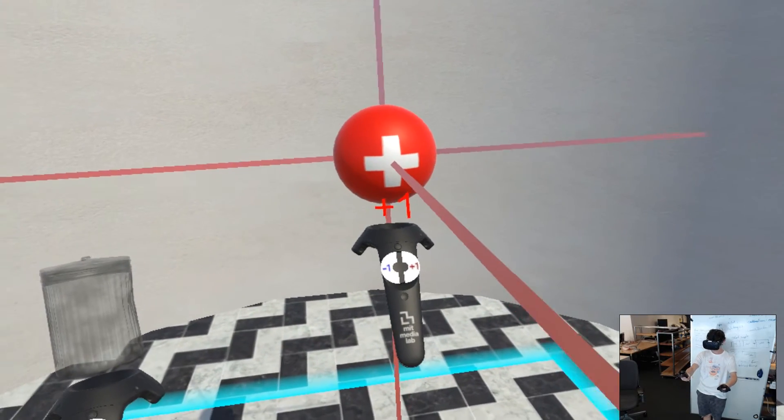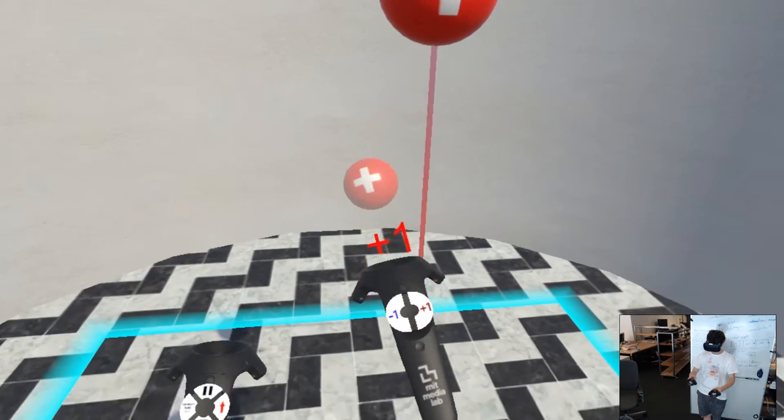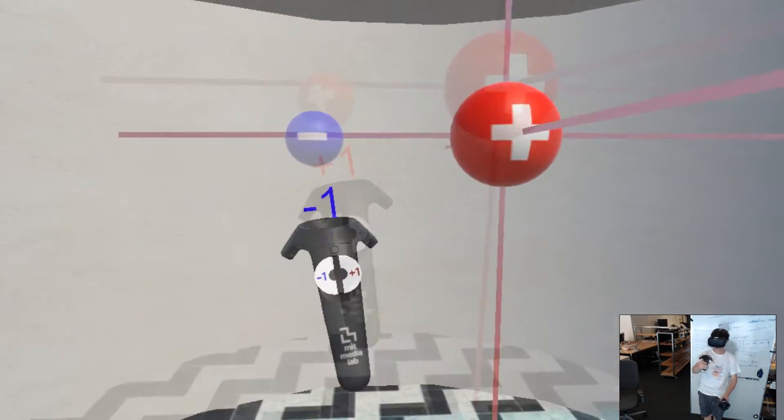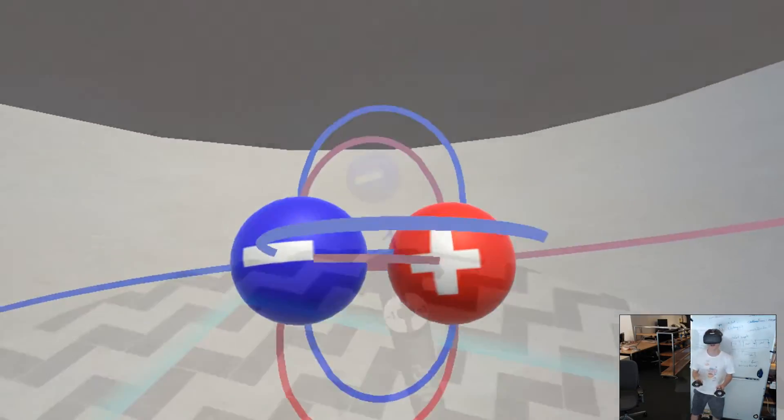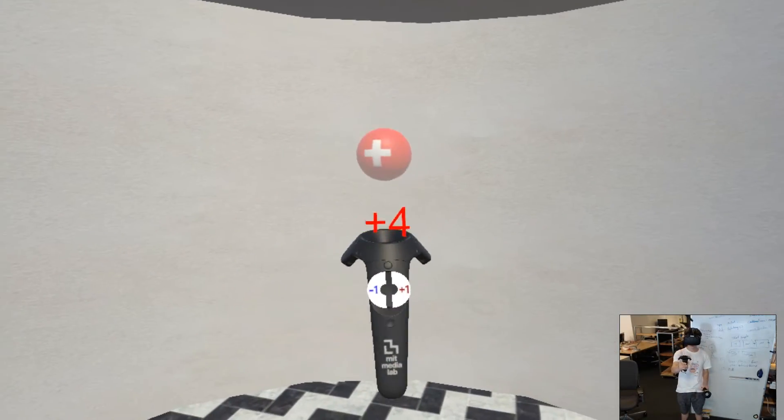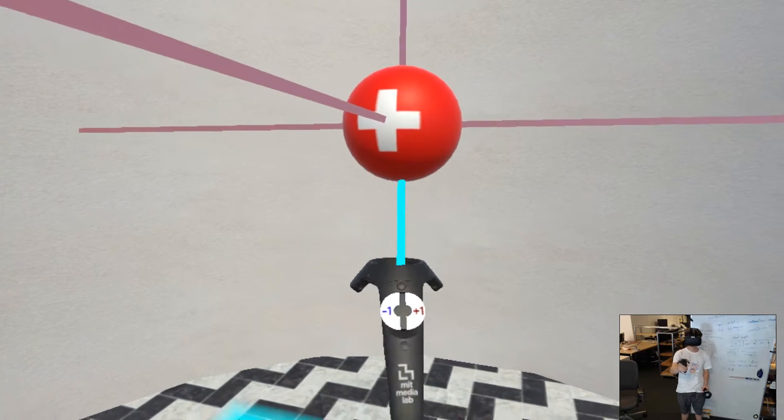You can create a charge at any point in 3D space. The charges react to each other by being attracted or repelled. Adjusting the magnitude of the charges changes how quickly they move towards or away from each other.